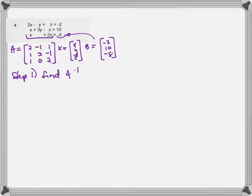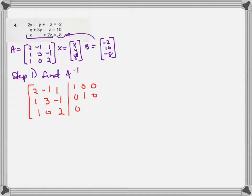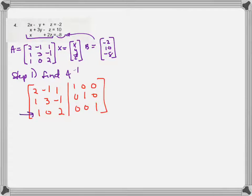The first step is to find the inverse of matrix A. Since A is a square matrix, I write A on the left-hand side and a 3×3 identity matrix — 1s along the diagonal, 0s everywhere else — on the right. The goal is to get the identity on the left side through row operations; then the right side will be the inverse.